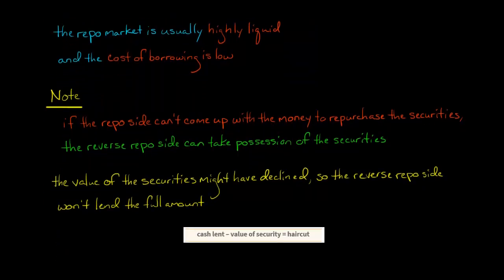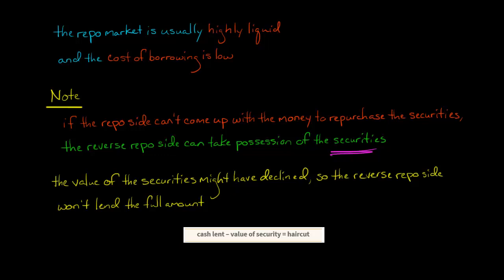There's a risk there. If you're the reverse repo side — basically the lender — when you get those securities back, there's a chance the value of them might have declined overnight or over the time period. So if those securities had a value of, say, 5,000 euros when you entered into the agreement, you're not going to lend 5,000 euros.